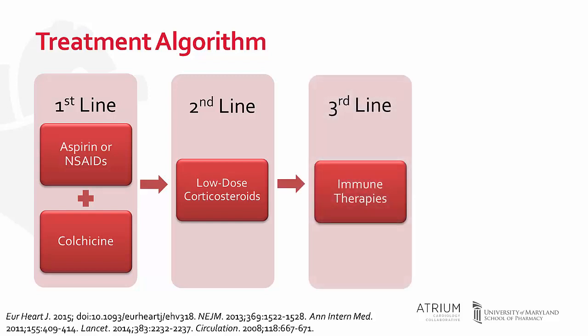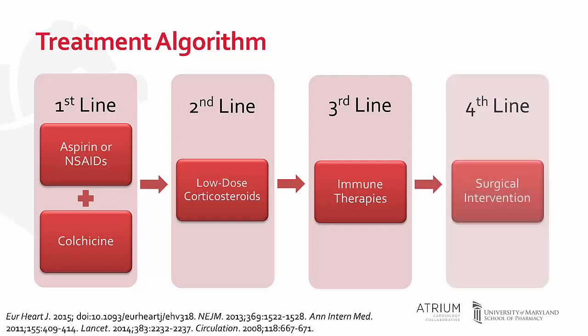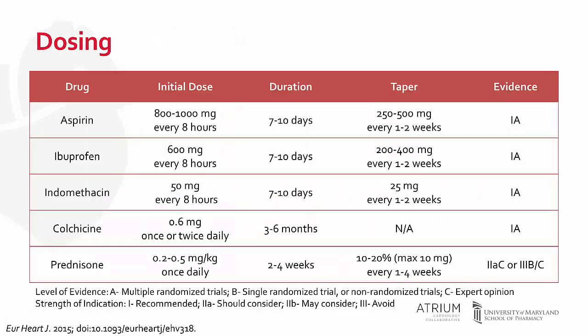Third-line agents include immune therapies such as azathioprine, intravenous immunoglobulin, and anakinra. However, data is scarce. Last-line includes surgical intervention, such as a pericardiotomy or removal of the pericardium, called a pericardiectomy.